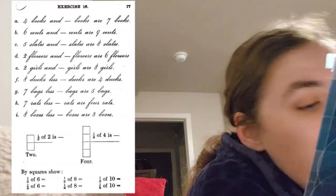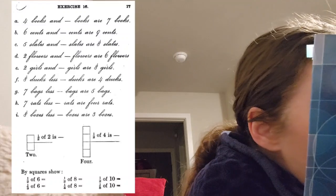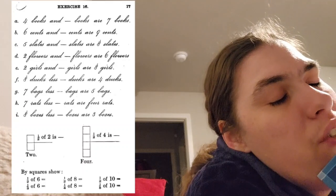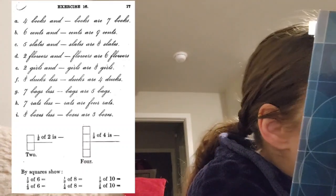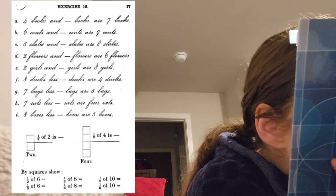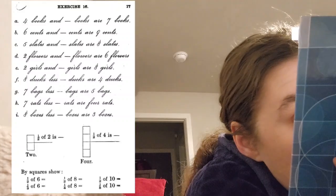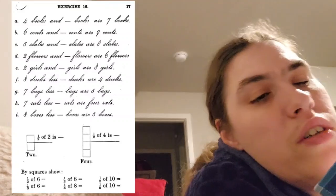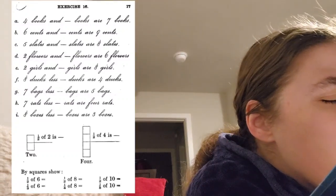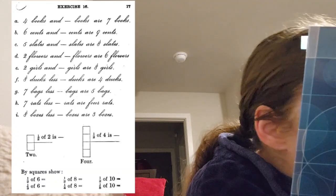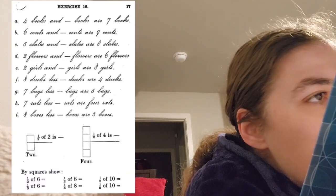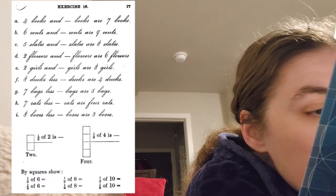That's a lot of slates. Two flowers and blank flowers are six flowers. Two flowers and four flowers are six flowers. Did I do that one of the flowers right? Two and four are six, right? Yeah.